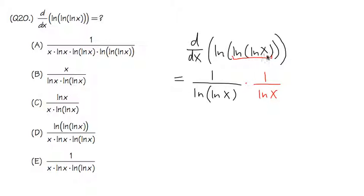But then we are not done yet, because this is the inside. We have to take the derivative of the inside again. So this part is ln x, and the derivative of ln x is just going to be 1 over x. So you have this.